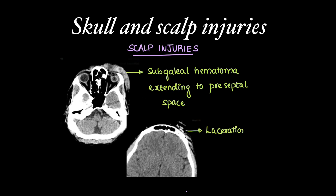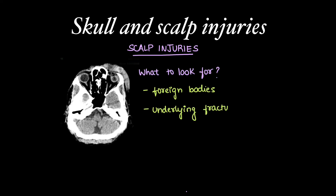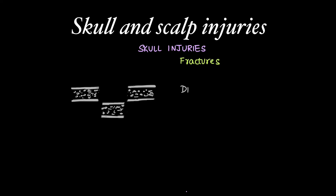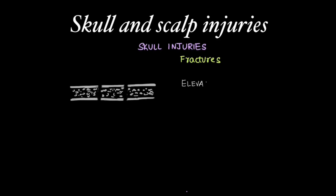In the next case we can see scalp lacerations. When scalp injuries are found, look for any foreign body in the subcutaneous tissue and underlying fractures or bleed. In skull injuries we can find fractures: a linear fracture is an undisplaced fracture; in depressed fractures the fracture fragment is displaced within the skull, which can further injure the meninges or the underlying cortex. There can also be elevated fractures where the fragment is displaced outside the calvaria.